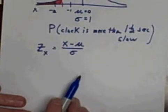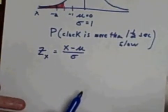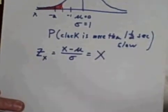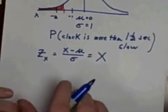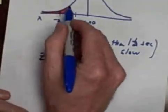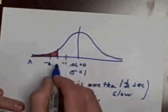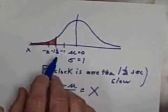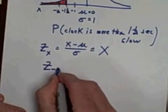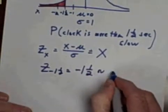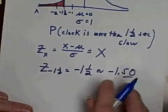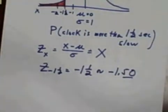For the standard normal distribution, the z-score of an x value is just whatever your x value is — they're the same number. So what I want to do is change my boundary line at negative one and a half to a z-score. The z-score for negative one and a half is just negative one and a half, or negative 1.50. Remember, z-scores are always written with two decimal places.